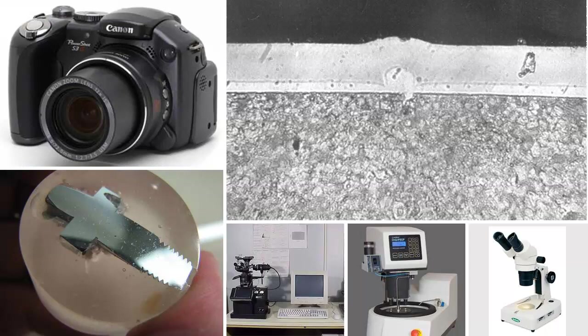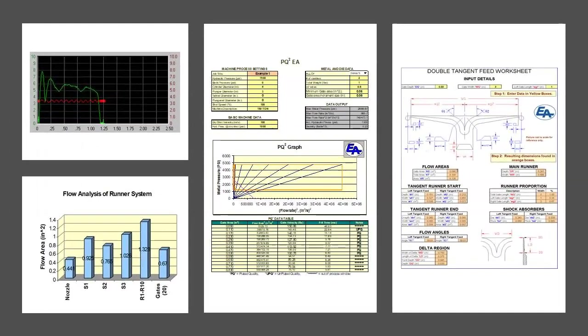Today we use metallographic techniques to section and examine the defects at higher magnification to help correctly diagnose those defects. We are experts at using available die casting tools such as PQ squared, flow analysis, and shot monitoring, and can even assist you in runner and gating design, all of which are important in diagnosing die casting defects.